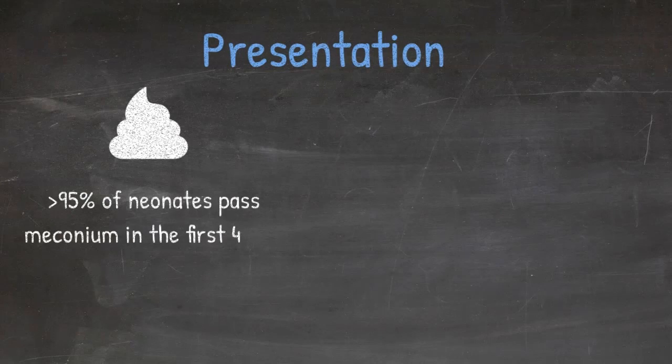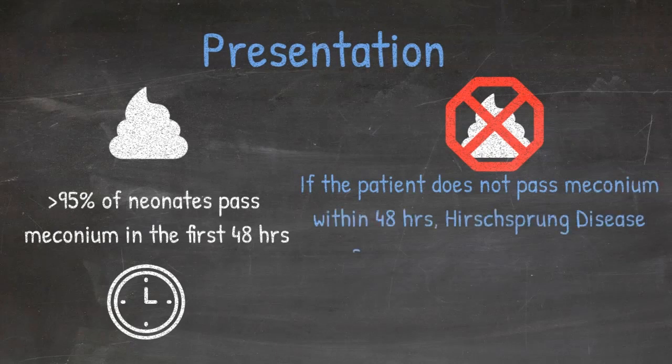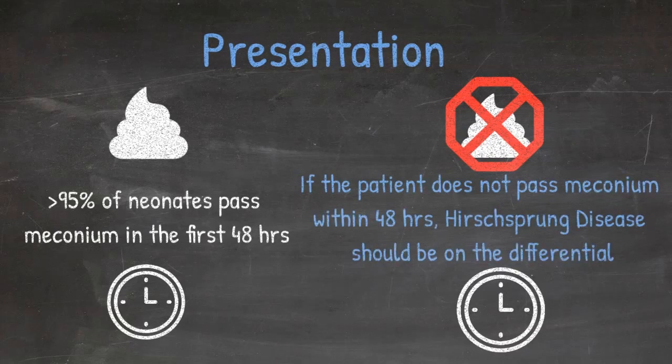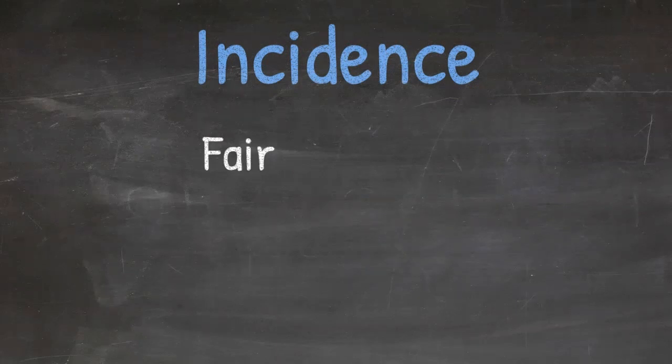So how does Hirschsprung disease typically present? More than 95% of neonates pass meconium within the first 48 hours of life, and failure to pass meconium is typical of Hirschsprung disease. If an infant who has not passed meconium in the first 48 hours of life presents to your clinic, the possibility of Hirschsprung disease should be entertained.